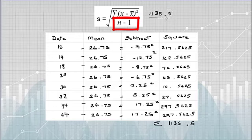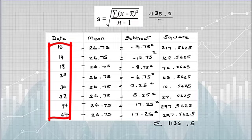The denominator has n minus 1. Our sample size is 8, so 8 minus 1 is 7.